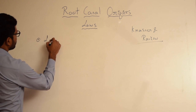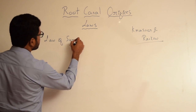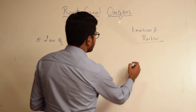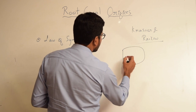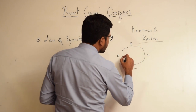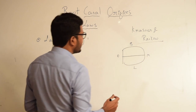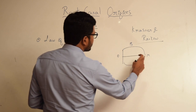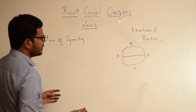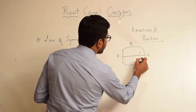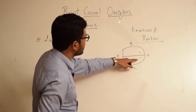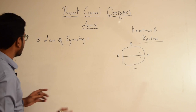Starting with the first law: Law of Symmetry 1. According to this law, if we draw a line in the center of a tooth at the level of CEJ extending mesodistally, then canals — except in the case of the maxillary first molar — are located equidistant from this mesodistal line. So Law of Symmetry 1 states that canals are equidistant from a line extending mesodistally.